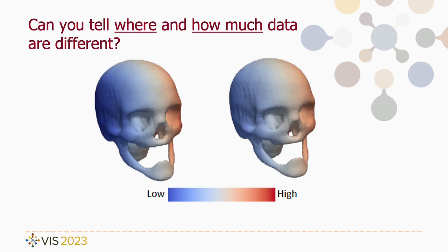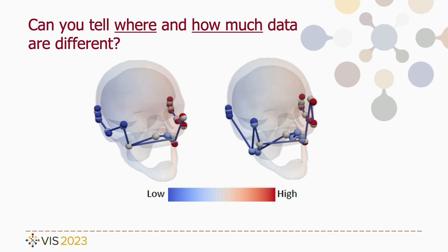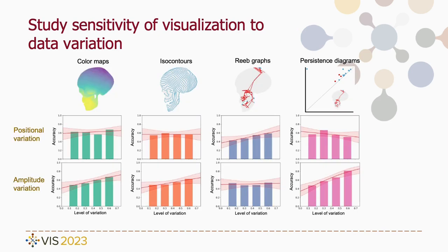Can you tell where and how much data are different in these visualizations? Perhaps not. How about these visualizations? Perhaps it is easier to perceive differences here. In this paper, we study sensitivity of color maps and topological visualizations to different data variations. Please attend our talk to know more about details of our study and its implications on visualization design and analysis.